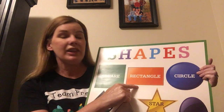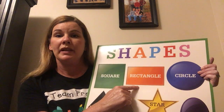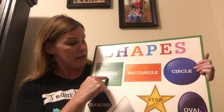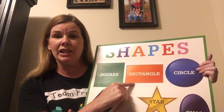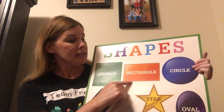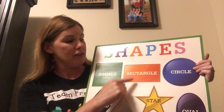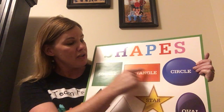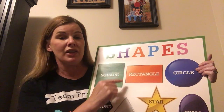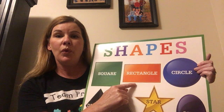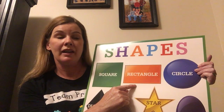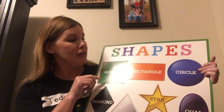Now let's look at this shape. This shape has four sides as well, but does it look the same? No, it looks a little bit different. These two sides are equal, and these two sides are equal. What is this shape? It's a rectangle.